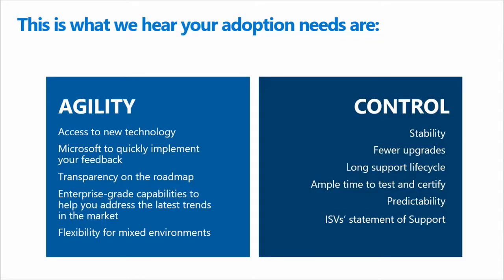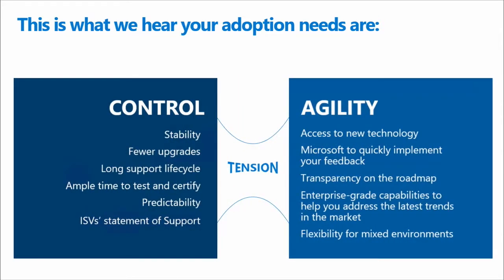We want to get to a point where we can provide customers with new capabilities as quickly as they can handle them, and at the same time provide them with new ways of deploying and managing those. As organizations overall, they really want the new capabilities, but at the same time they also want control. They want to be able to manage how those updates are deployed, test them inside of their own organizations, and deploy them on their own schedule. Those are kind of different goals — providing much more agility while providing controls kind of contradicts itself to a certain extent, but we think we can develop something in between that provides the best of both: balancing the tension and letting organizations take new capabilities on a more relaxed schedule.